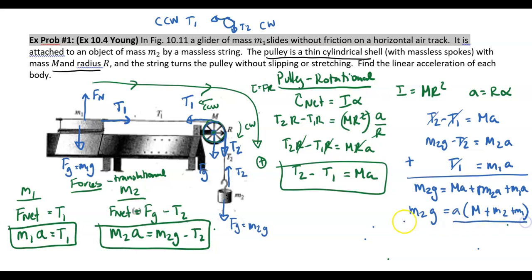So what I'm going to do is I'm just going to divide both sides by this whole big thing. So it's M plus M2 plus M1. And we got our answer.